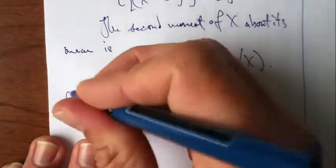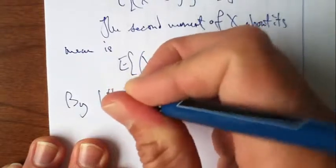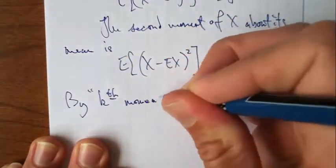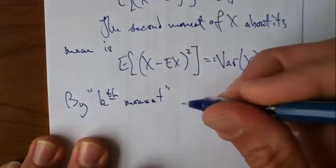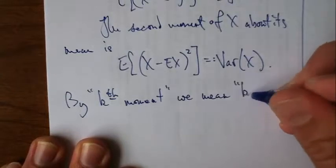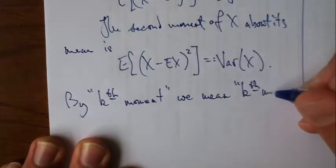All right, so by kth moment, if we just say kth moment and we don't say kth moment about a point, we just say kth moment, what we mean is we actually, that's just short for saying kth moment about 0.